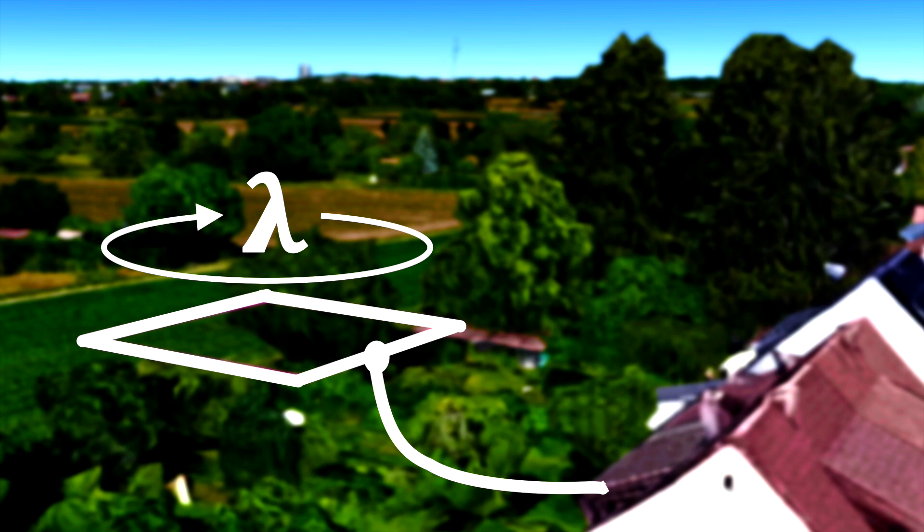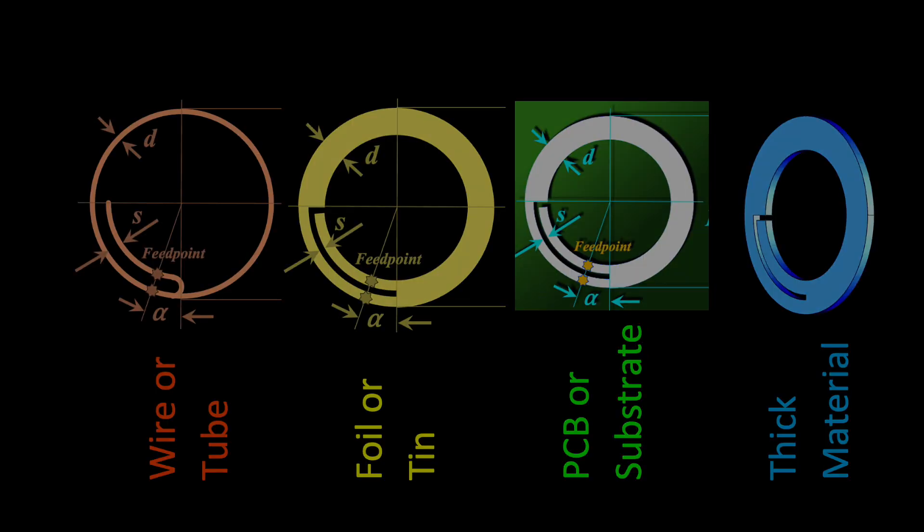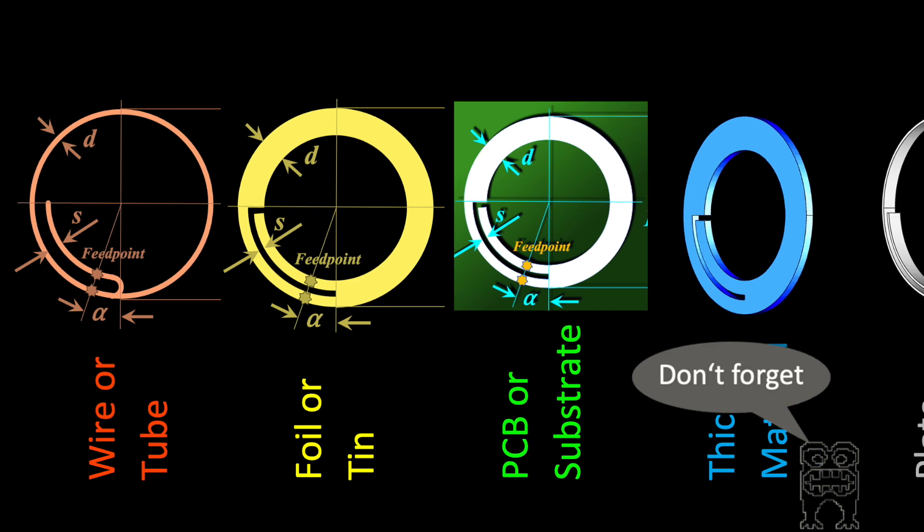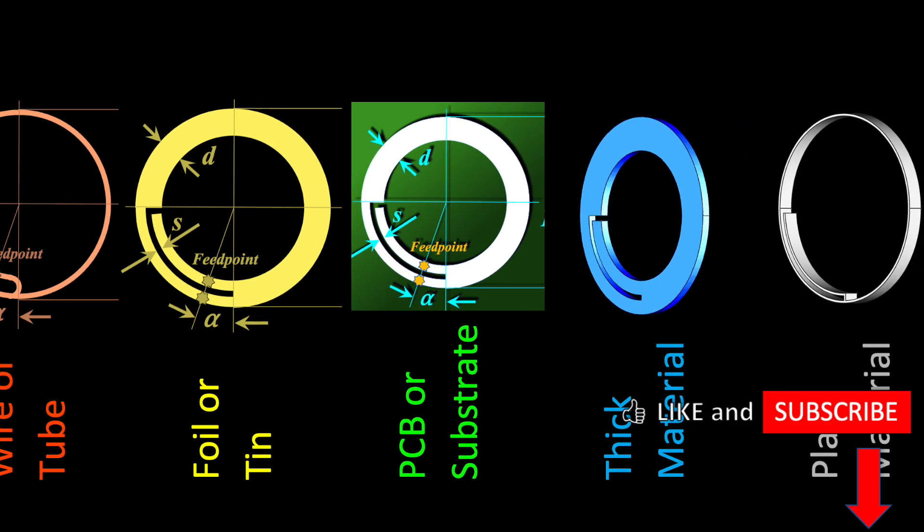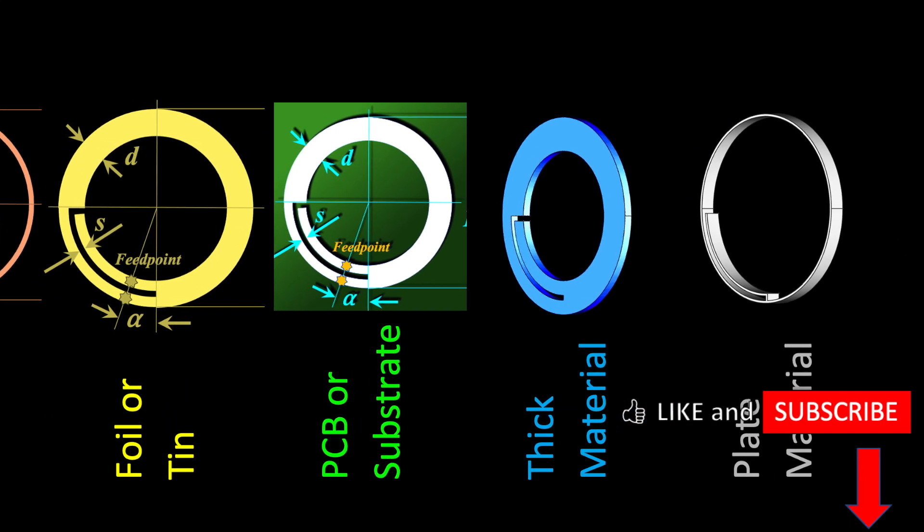The DIY loop antenna is popular for shortwave, especially among radio amateurs. Here on Electronics Unmasked we examined and tested a number of lambda loops in the frequency range 145 to 2400 MHz.